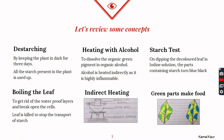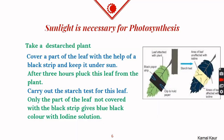The areas which were green earlier have turned blue-black, confirming the result. Another condition essential for photosynthesis is sunlight, and we can prove it with the following activity. First, we take a destarched plant kept in dark for at least three days. A leaf of this plant is then covered with a black strip so that part does not receive any sunlight.